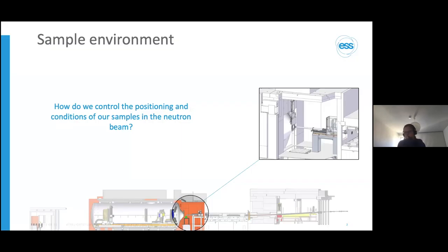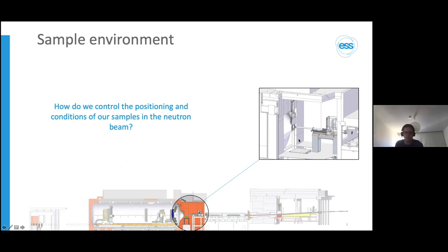As you've heard previously, for the instrument — I've put a little sketch of the LOKI SANS instrument at the ESS here — we have our neutron beam coming in from the right, different collimation sections going into a little room we call the sample area, where our samples are positioned on the sample table. The neutron beam hits the sample, it scatters, and is detected in the detector area. This sample area is where you as a user will interact the most — you open a big shielding door, go in, set up your samples and sample environment, then close the door and control the experiment from a computer.